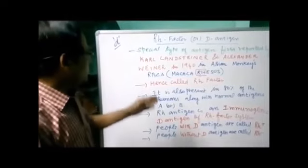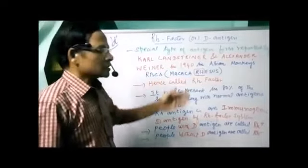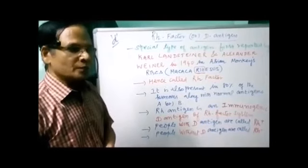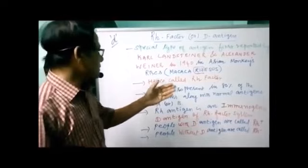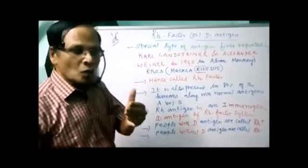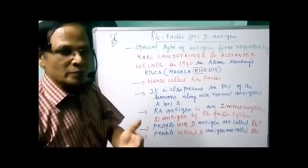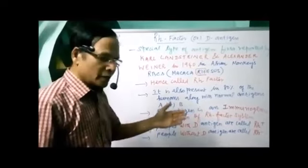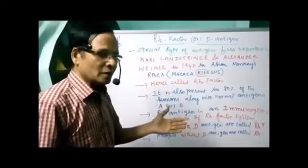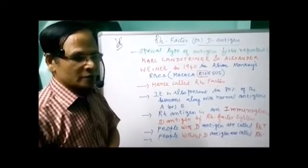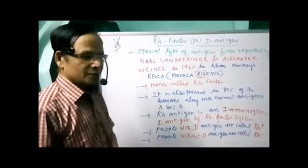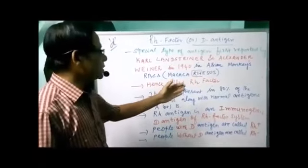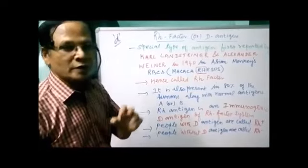Two names. Though it was reported in the rhesus monkey, later it was also reported in 80% of humans along with their normal antigens A, B, both, or neither. So they have their own antigens — either A or B or both — and some have no A or B antigens, but they have this Rh antigen.